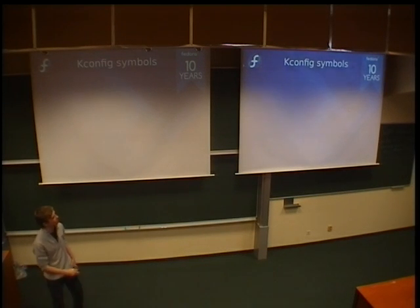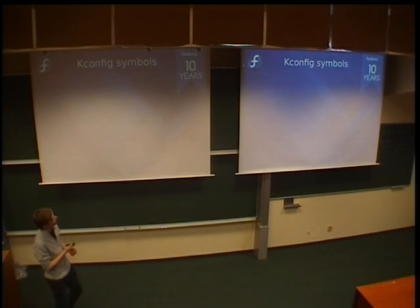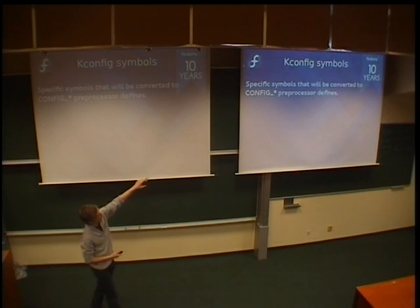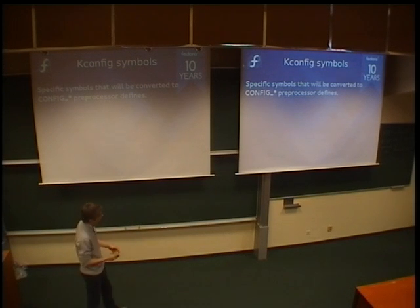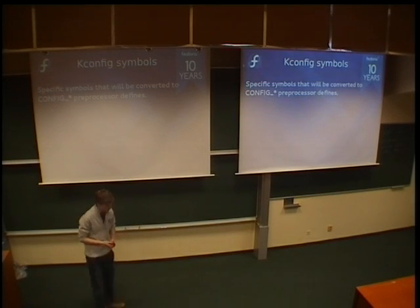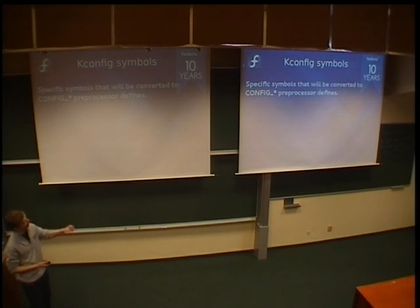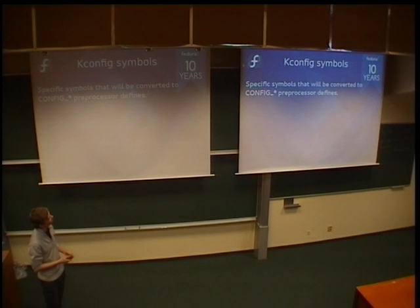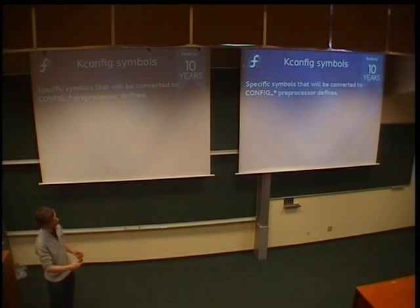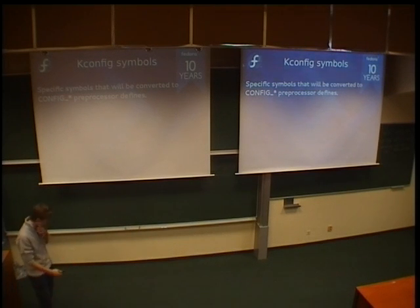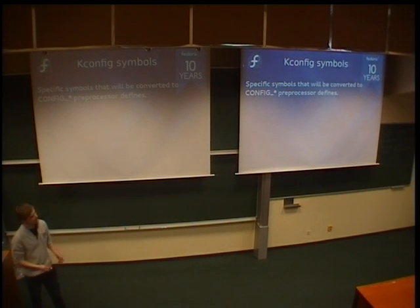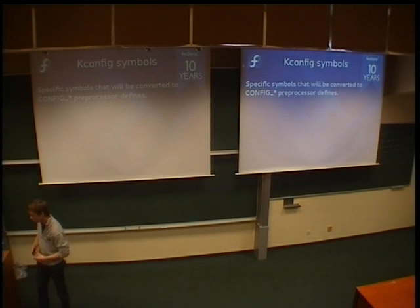Kconfig symbols: each symbol will be converted to a CONFIG_* preprocessor define. For example, if we have a kconfig symbol called ETA_ACPI, that kconfig variable will be converted to CONFIG_ETA_ACPI as a preprocessor define. You will then be able to use that in kernel C code and in make files as well.